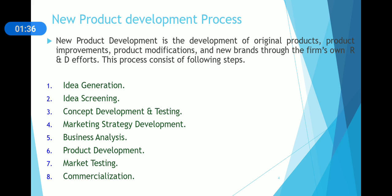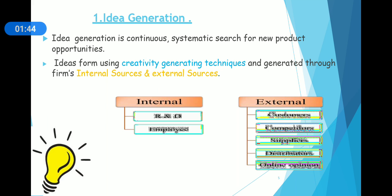The first stage is idea generation. Idea generation is a continuous, systematic search for new product opportunities using creativity and idea-generating techniques. Ideas are generated through the firm's internal sources and external sources. Basically, idea generation is where we generate ideas through internal and external sources, such as through marketing research and understanding people's tastes and preferences.